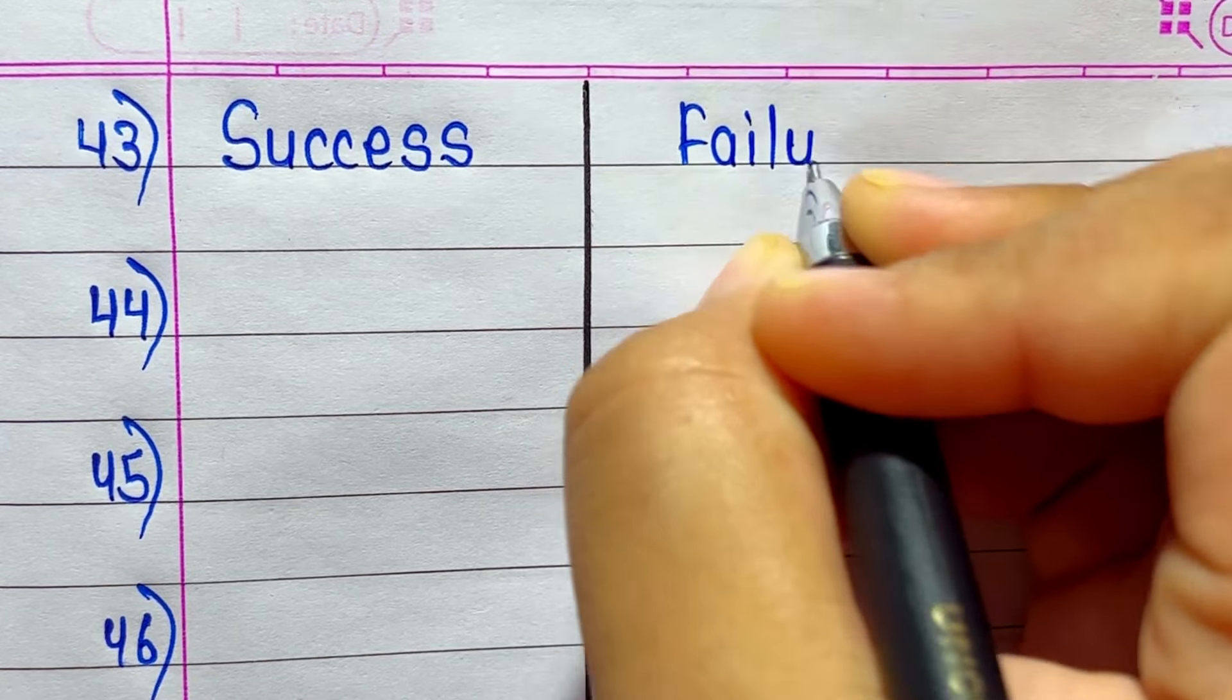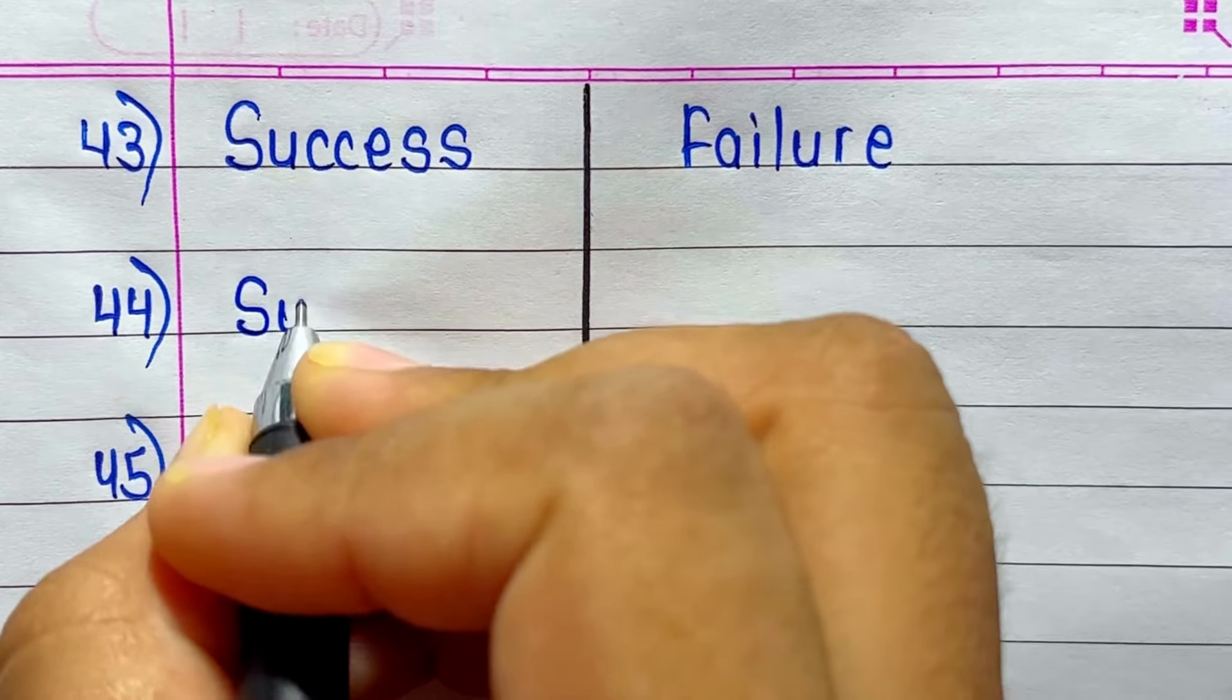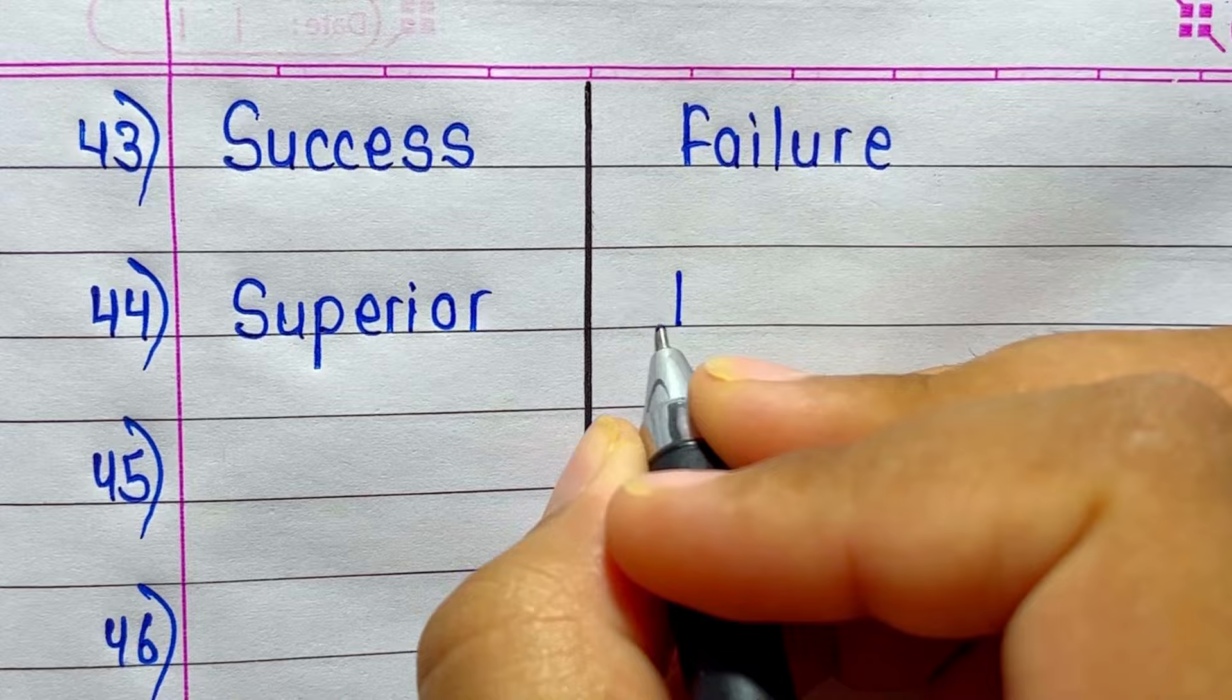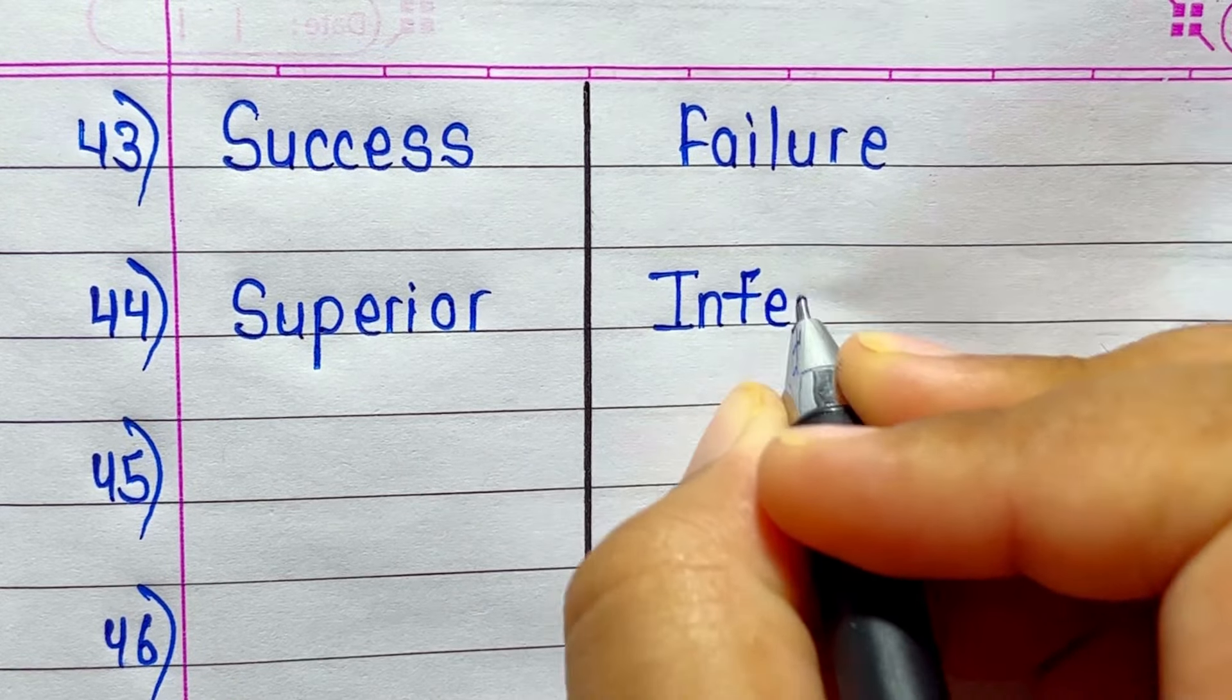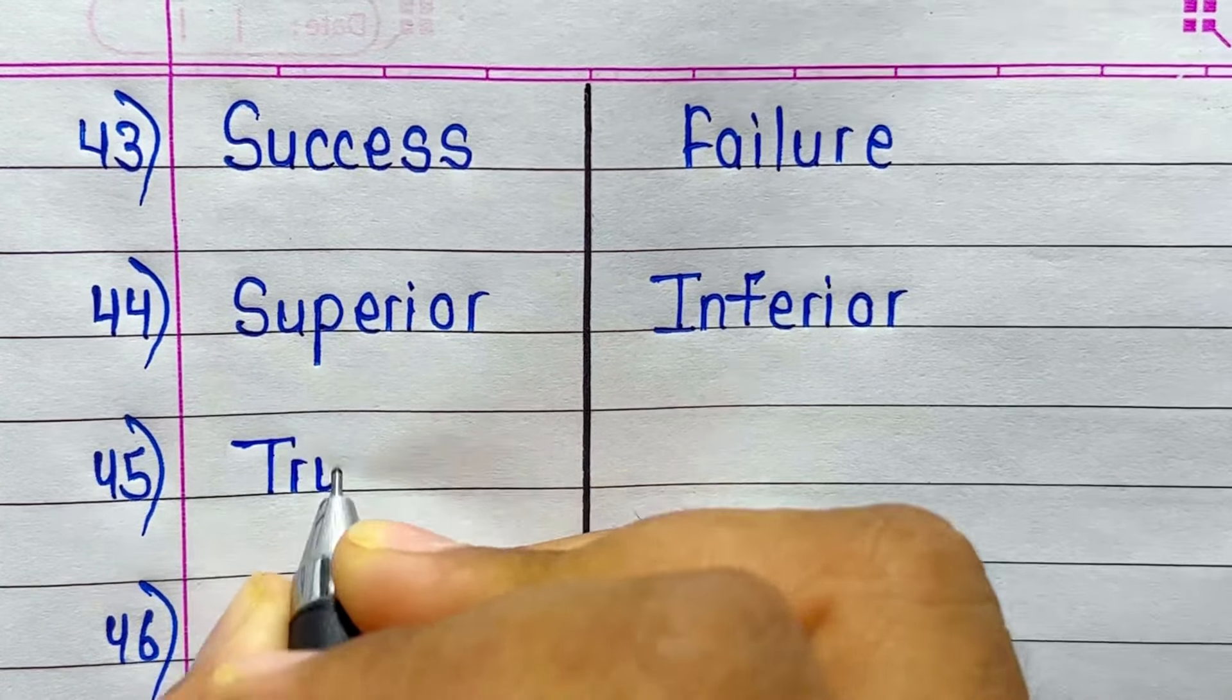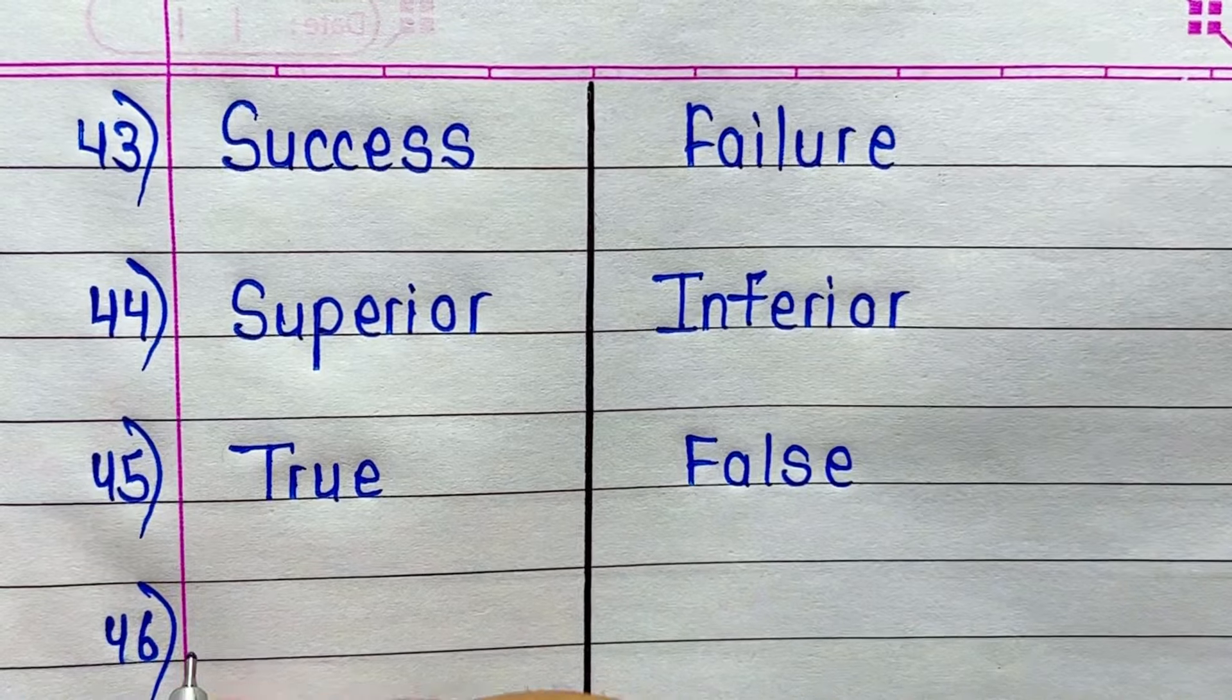Success. Antonym of Success is Failure. Antonym of Superior is Inferior. True. Antonym of True is False.